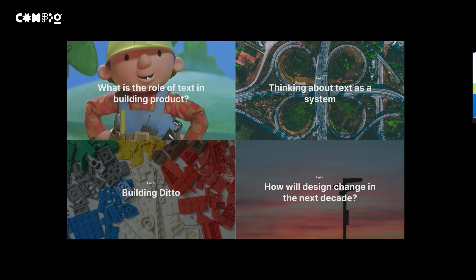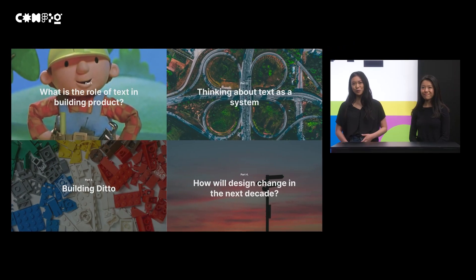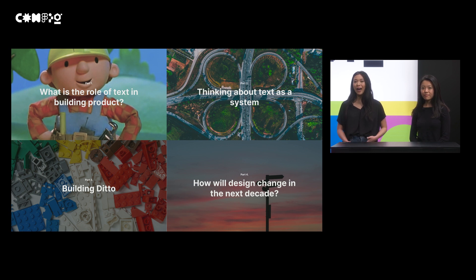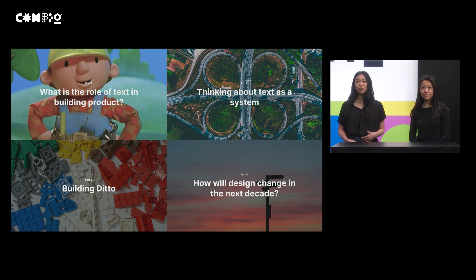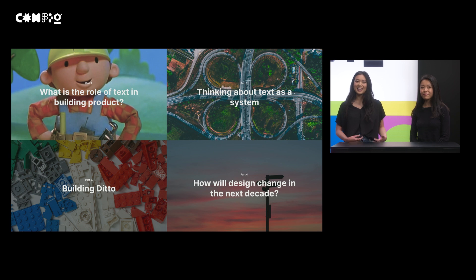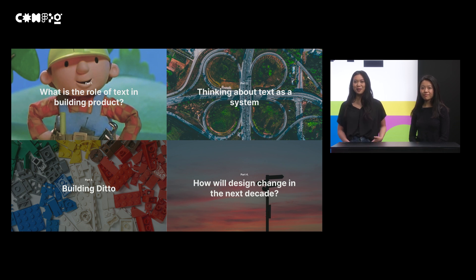We're going to share this through four parts. First, we'll talk through the role of text in building product. Next, we'll share how and why we think text should be thought of as a system. Then we'll get into our journey of building Ditto and what we've learned. And lastly, we're going to wrap up with how all the above has informed how we think design is going to change in the next decade. So now I'm going to pass things off to Jess to get us started.